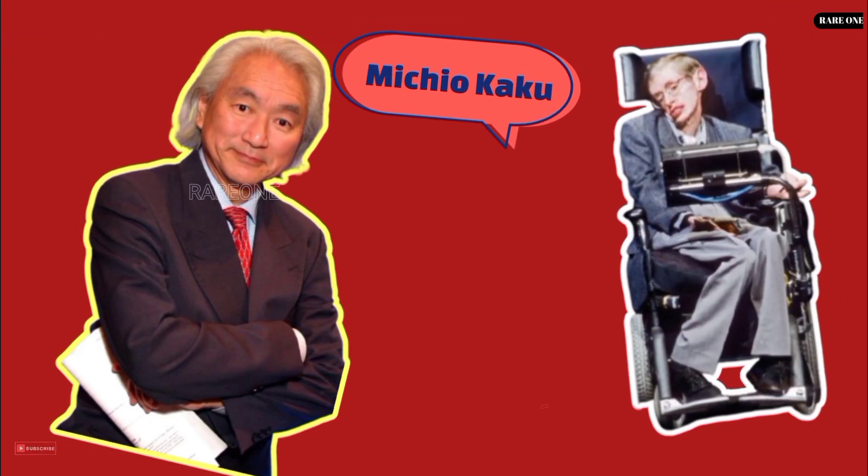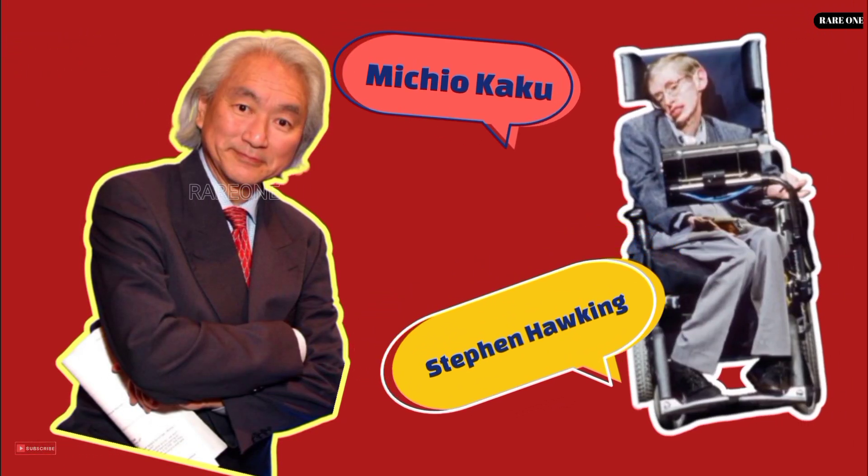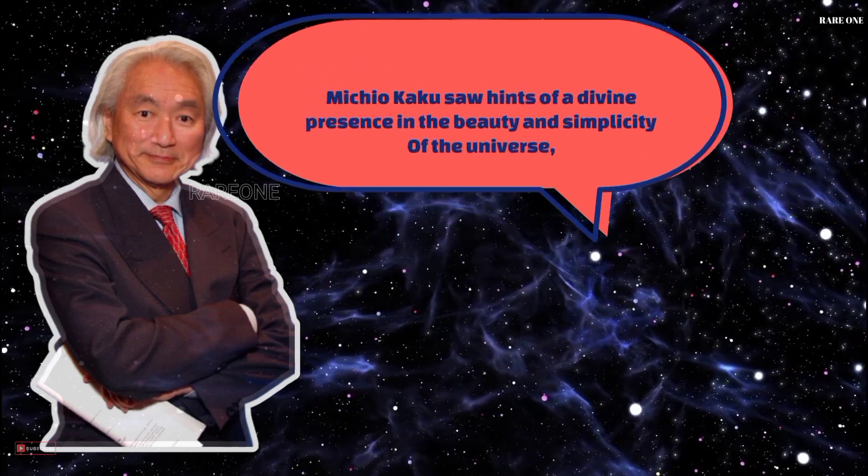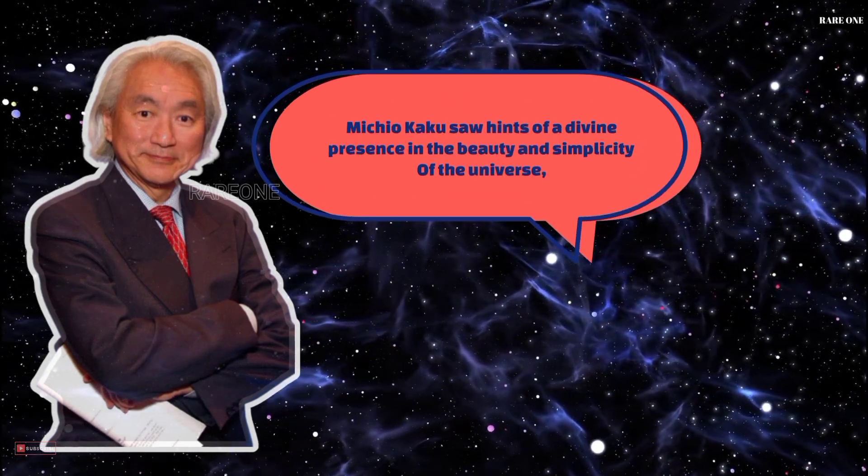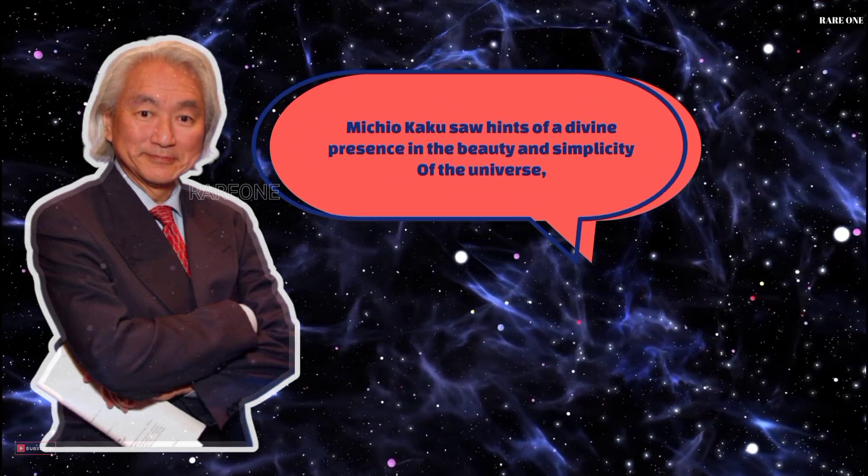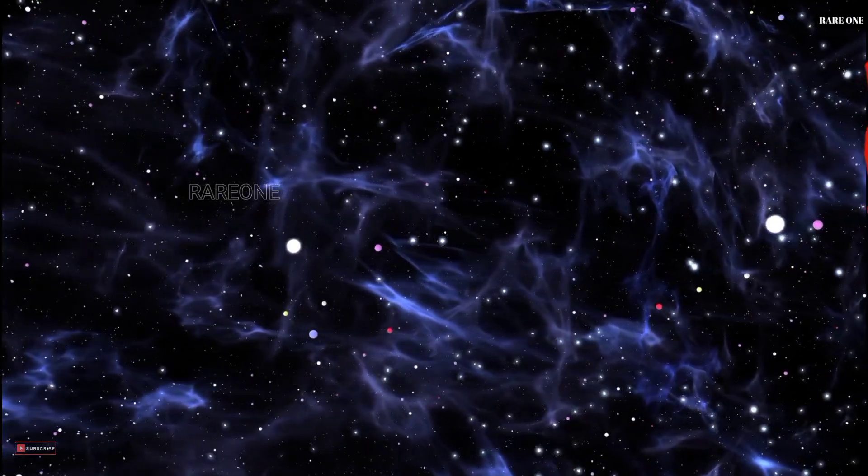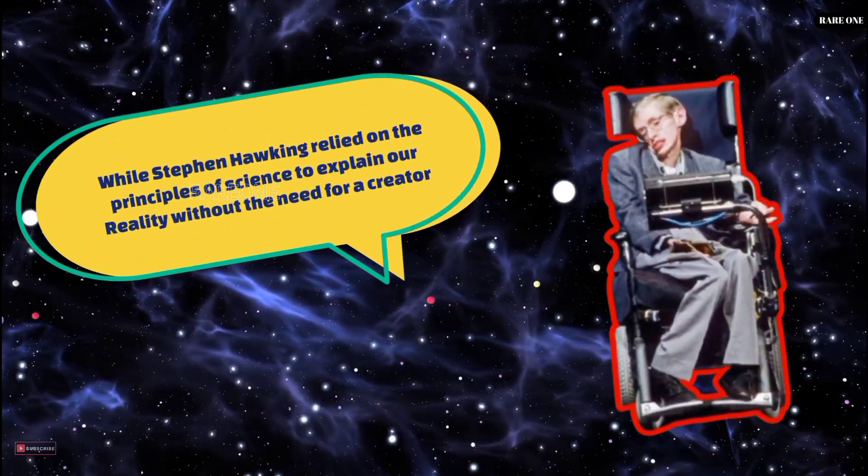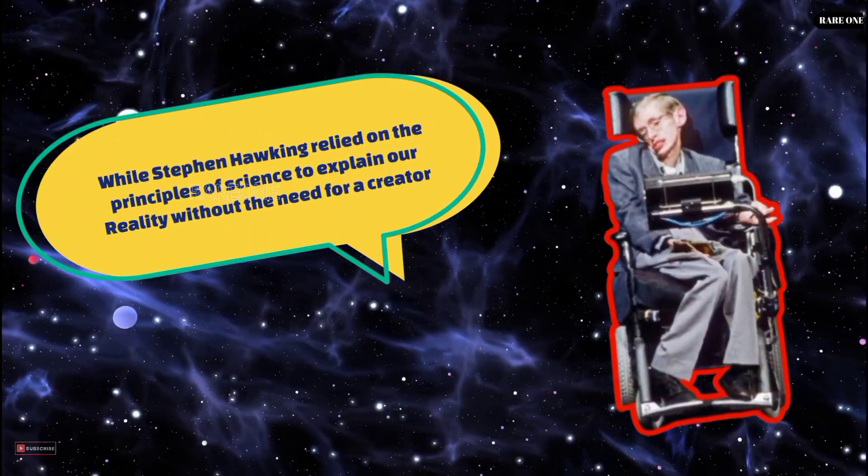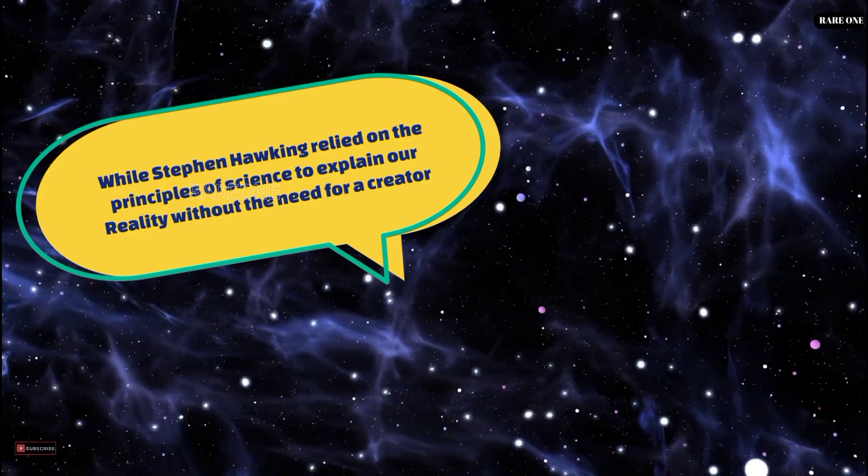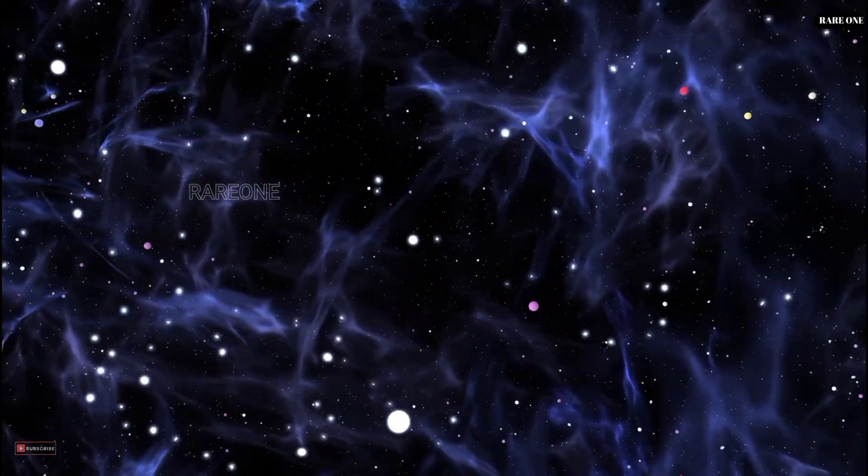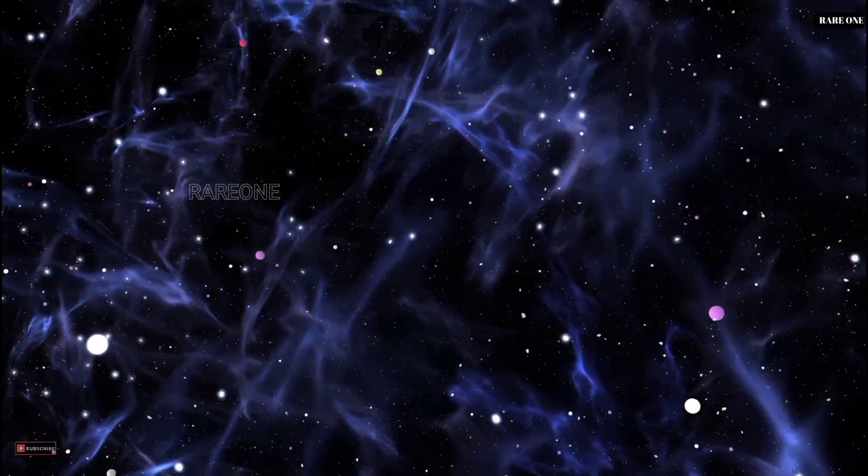Michio Kaku and Stephen Hawking both had fascinating views on the existence of God, but they approached the question from very different angles. Michio Kaku saw hints of a divine presence in the beauty and simplicity of the universe, while Stephen Hawking relied on the principles of science to explain our reality without the need for a creator. Let's explore their unique perspectives on this age-old question.